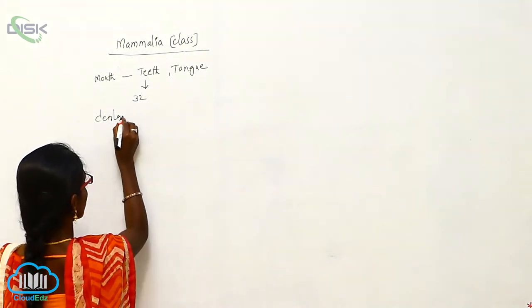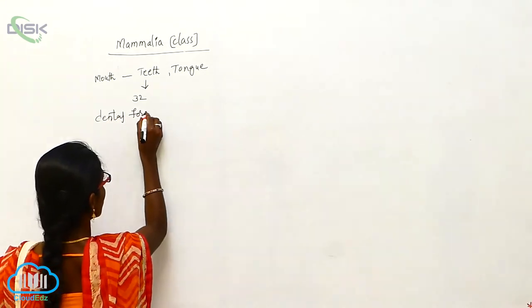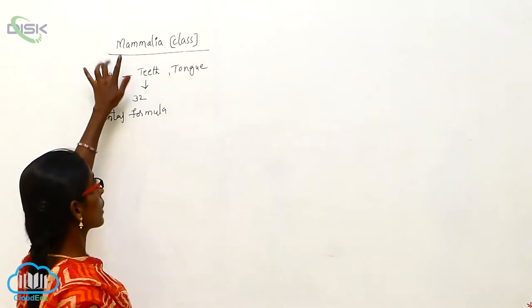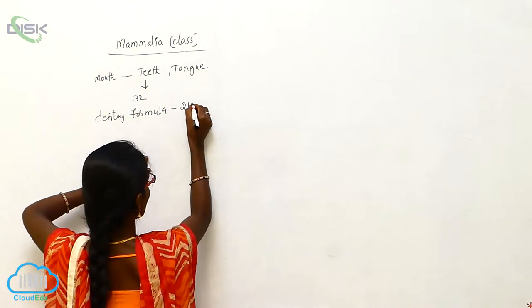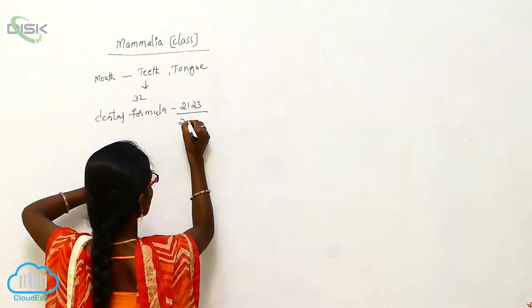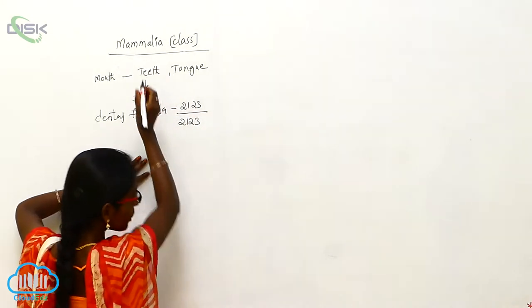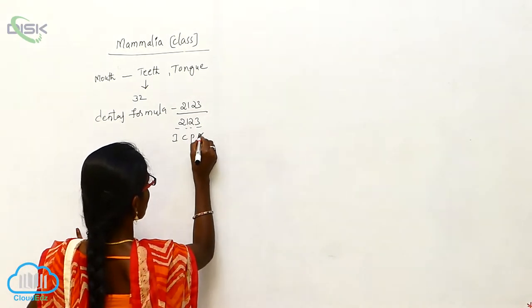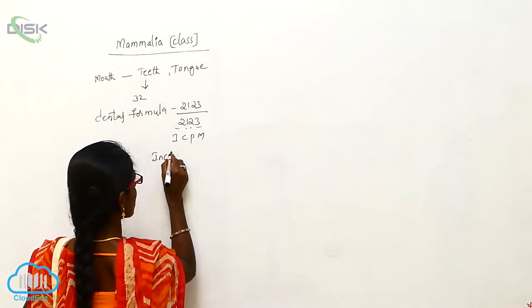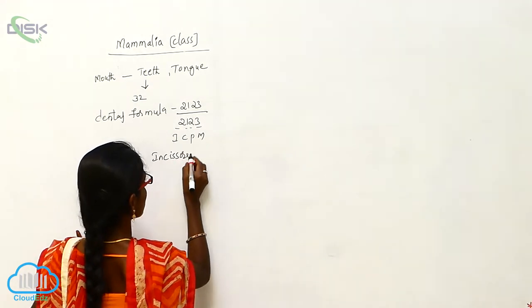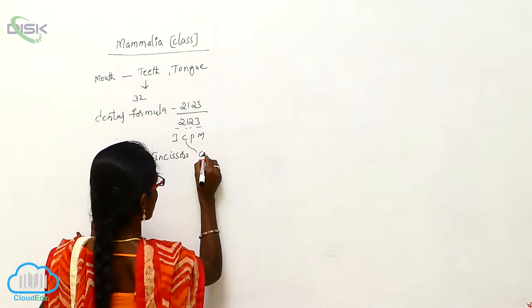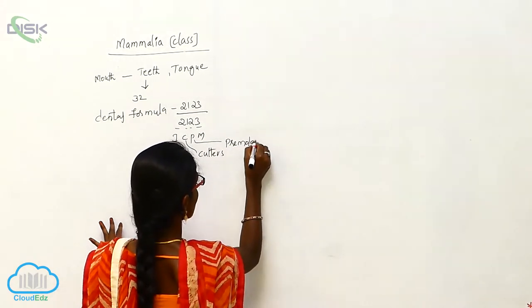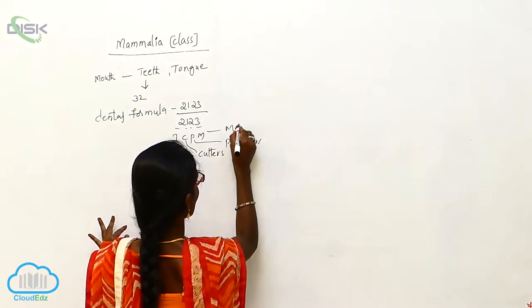The dental formula of human beings or mammalia is 2123 by 2123. So here this comes from the ICPM: incisors, canines, premolars and molars.